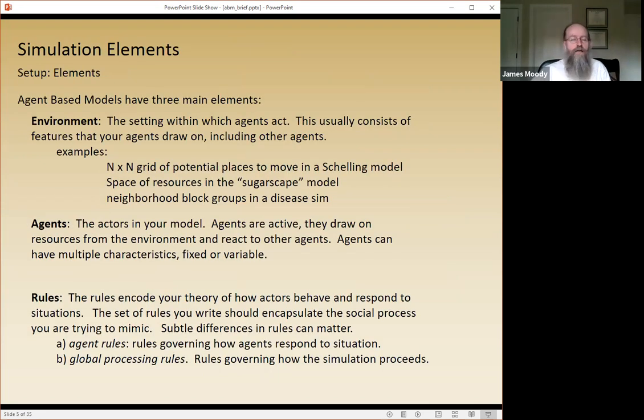I set the wider talk up around three kinds of things that happen in any simulation. Any simulation has an environment, it has agents, and it has rules. The environment is this setting within which agents act, which includes other agents. It's where agents draw the input and where they usually put their output. It can range from everything from an actual map for a neighborhood block group, if you're doing a disease simulation in a city, to an abstraction like an n-by-n grid or a random graph.